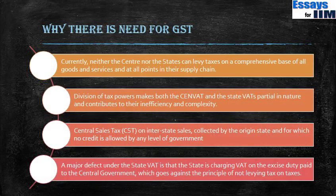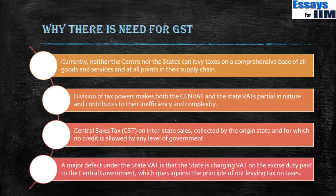Now, why do we need GST? Currently, neither the centre nor the states can levy taxes on a comprehensive base of all goods and services at all points in the supply chain. The centre taxes services and manufacturing, but states cannot tax manufacturing — states can only tax sales. So neither the centre nor the state can levy taxes at each point of the supply chain. The division of tax powers makes both CENVAT and state VATs partial in nature, contributing to inefficiency and complexity — the rules are so complex they reduce the efficiency of the entire economy.